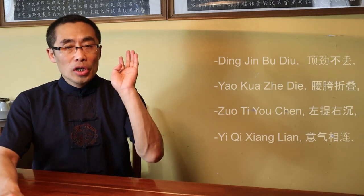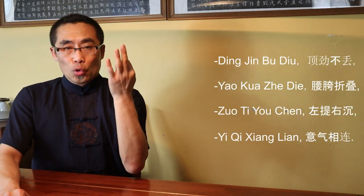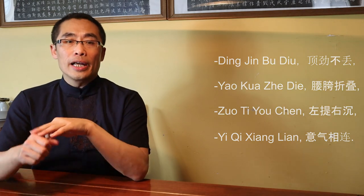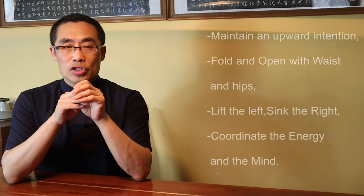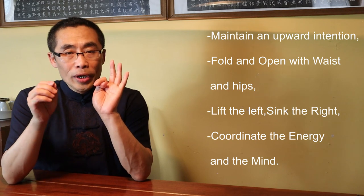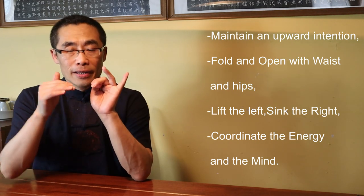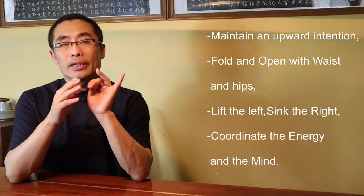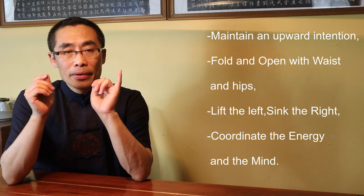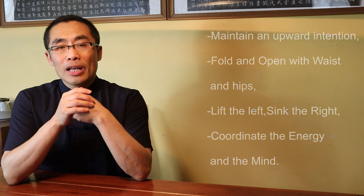How to practice it? I would like to introduce some principles first, then demonstrate in the next topic. To help you memorize them, I would like to read them in Chinese. They are: Ding Jin Bu Diu, Yao Qua Zhe De, Zuo Chen You Ti, Yi Qi Xiang Lian. In English, they are: Maintain an Upward Intention, Fold and Open with Waist and Hips, Lift the Left and Sink the Right, and Coordinate the Energy and the Mind. Now let me explain them for you.